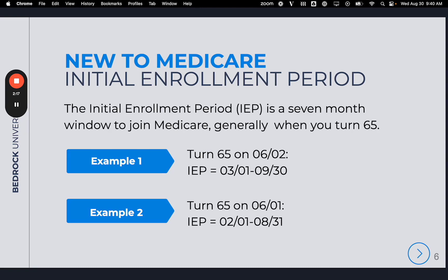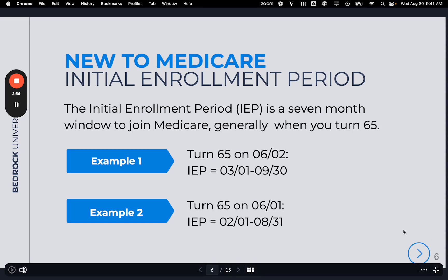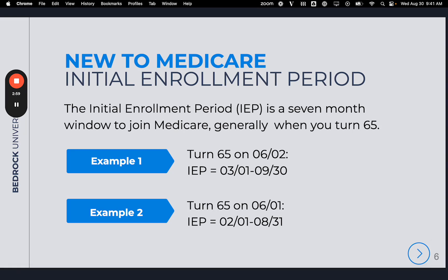There is one exception to note: when someone turns 65 and their birth date falls on the first day of the month, their IEP begins a full month earlier. For example, someone turning 65 on June 1st — instead of starting on March 1st, their IEP will begin on February 1st. Their plan can take effect as early as May 1st, and their IEP ends August 31st. That whole 7-month window has moved back one month. Generally, the rule is three months preceding the birthday month and three months following.